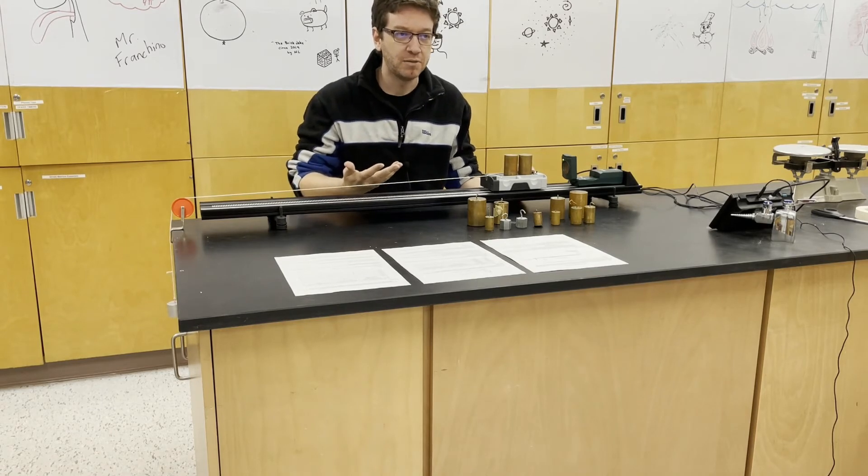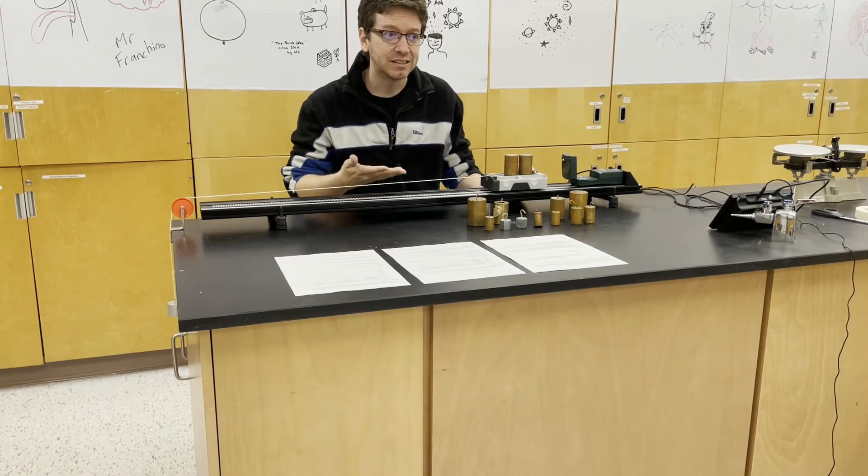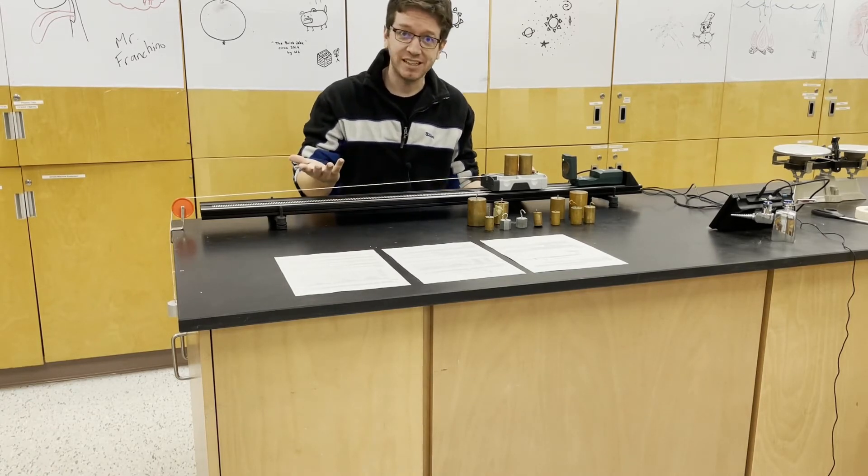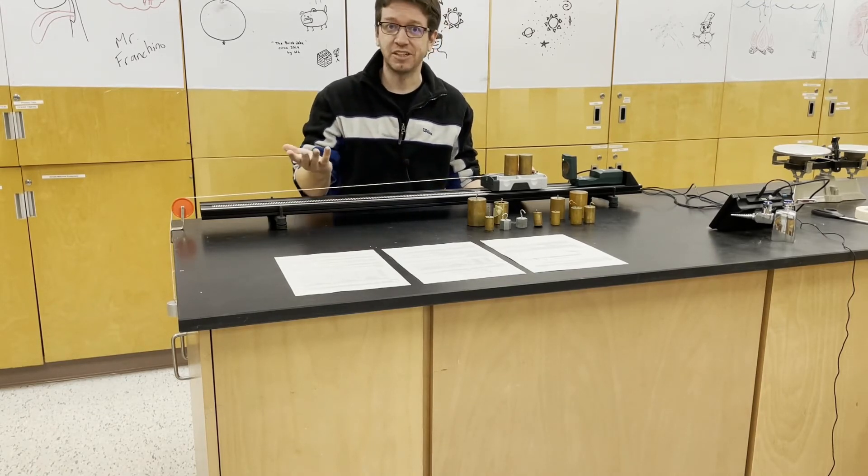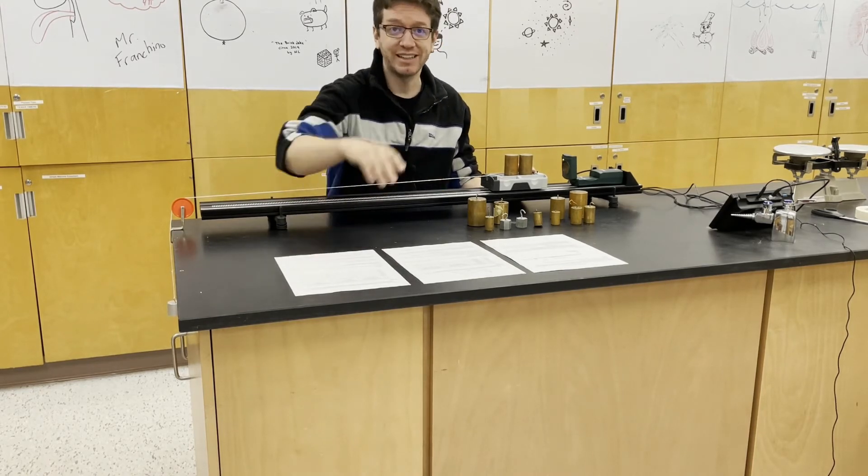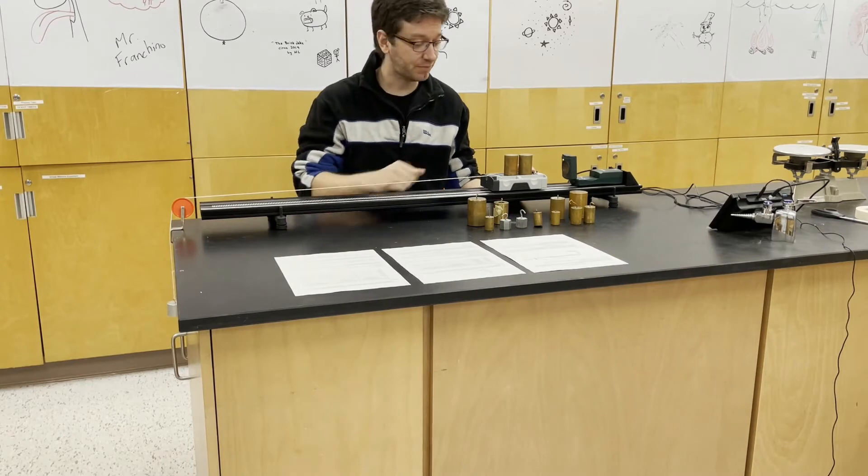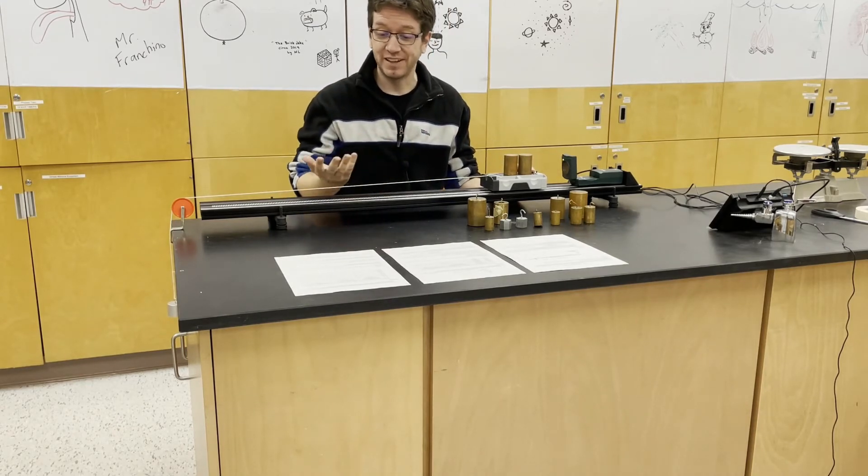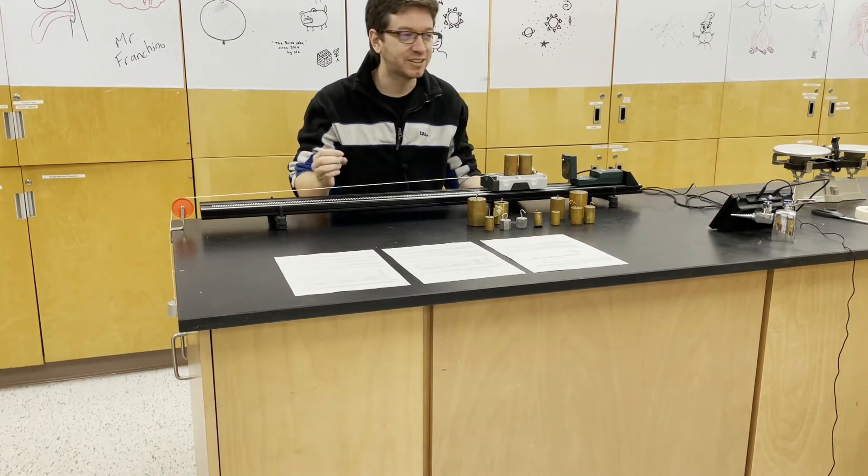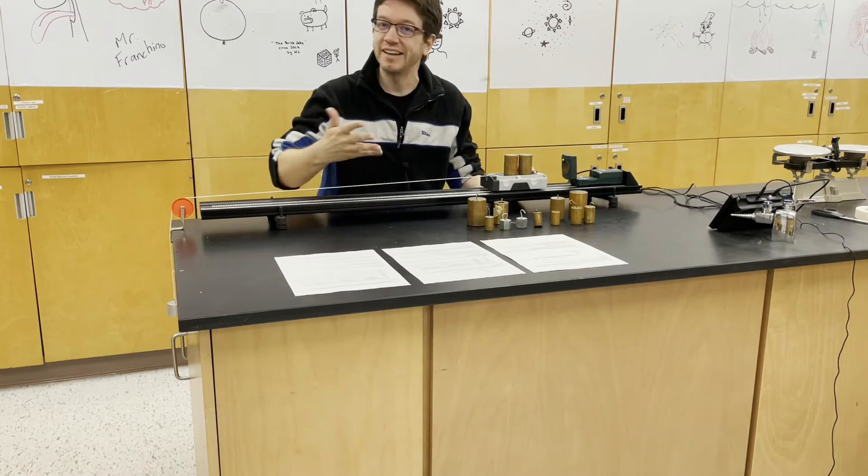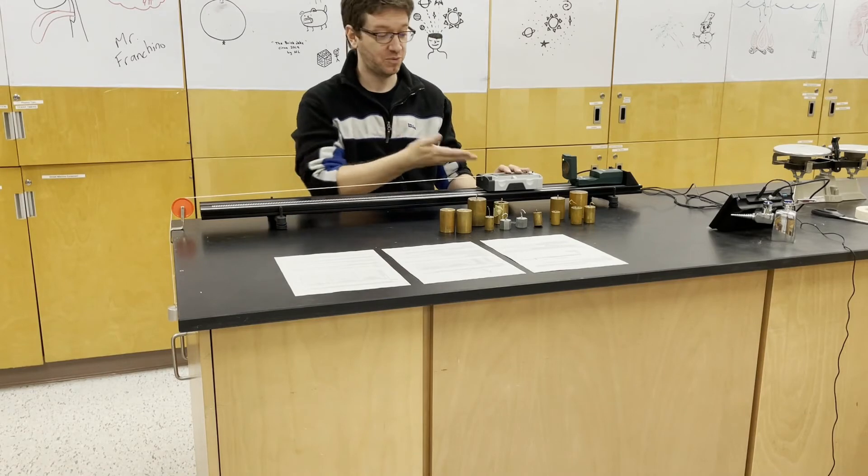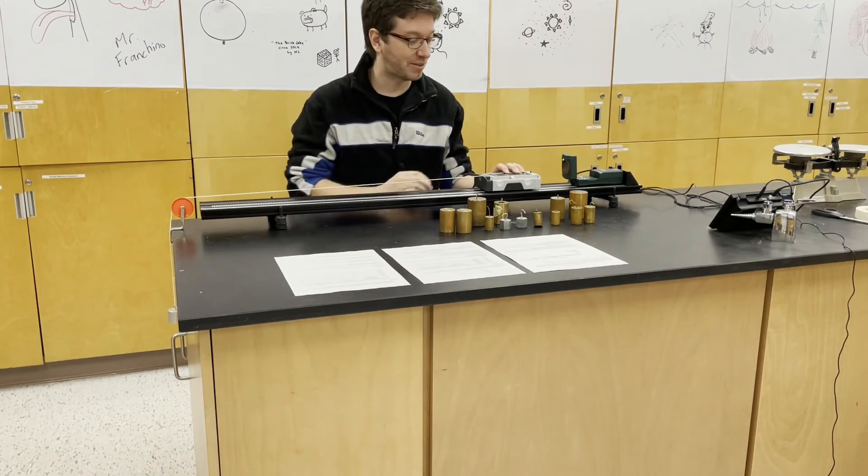So if I double the mass, does that double acceleration, quadruple acceleration, half acceleration or quarter acceleration or something else? So we're going to create a chart, or you can use the one in the handout in the description. And then you can plot a graph of acceleration versus mass to see if that relationship would be inverse or linear, quadratic, whatever. So we're going to start with just our 260 gram cart.